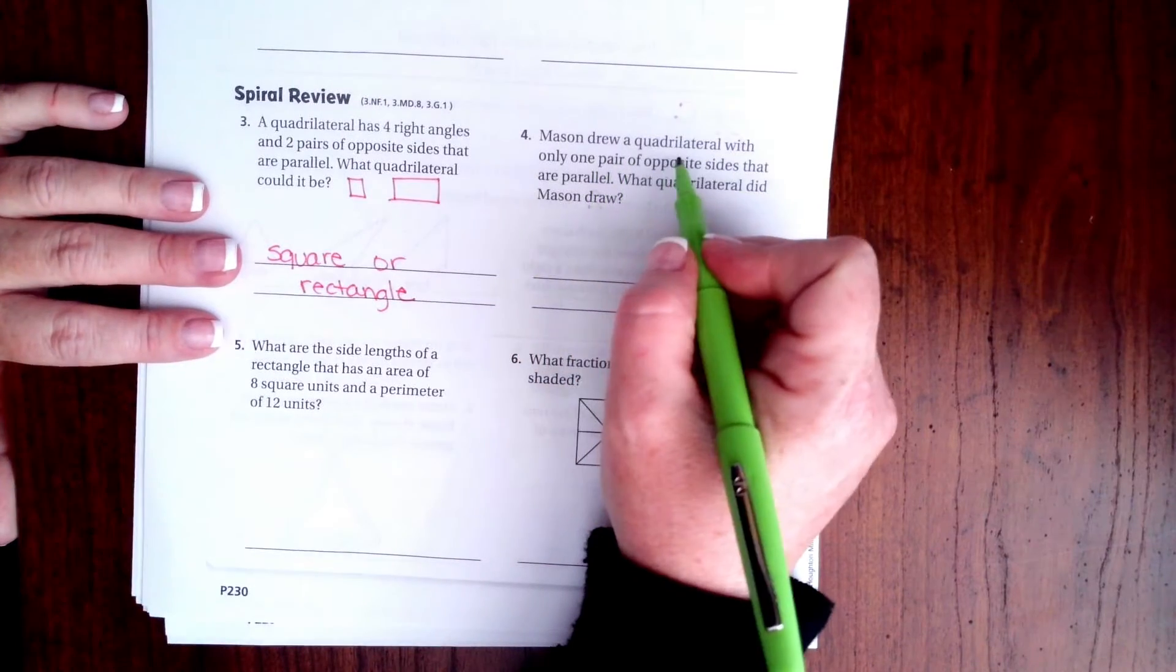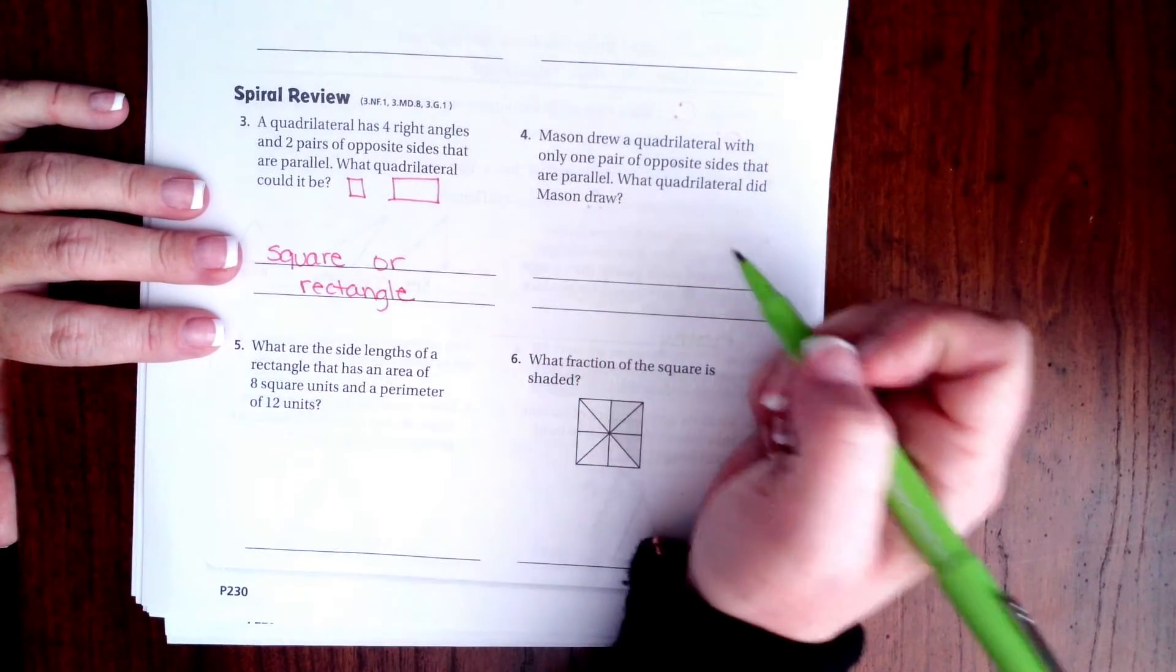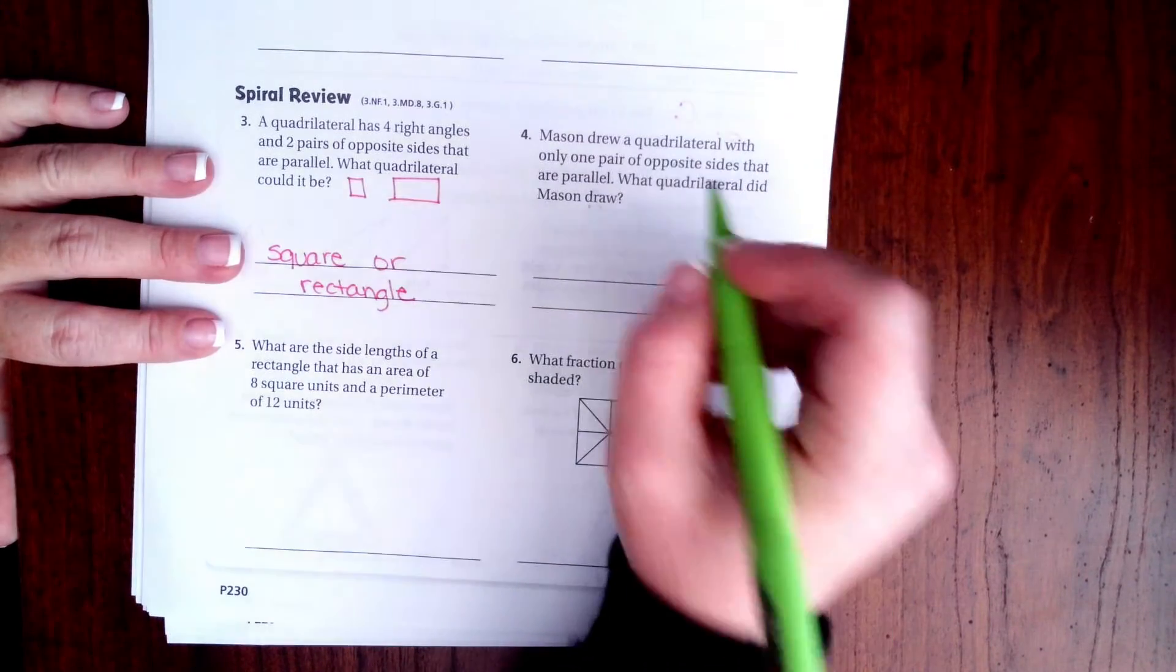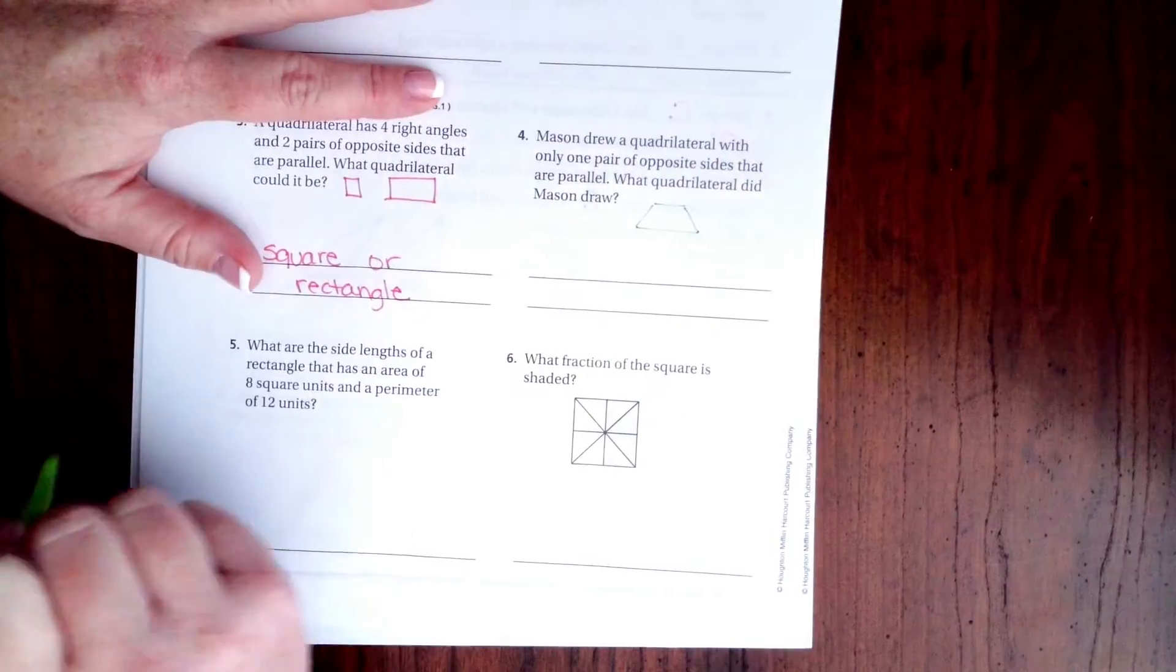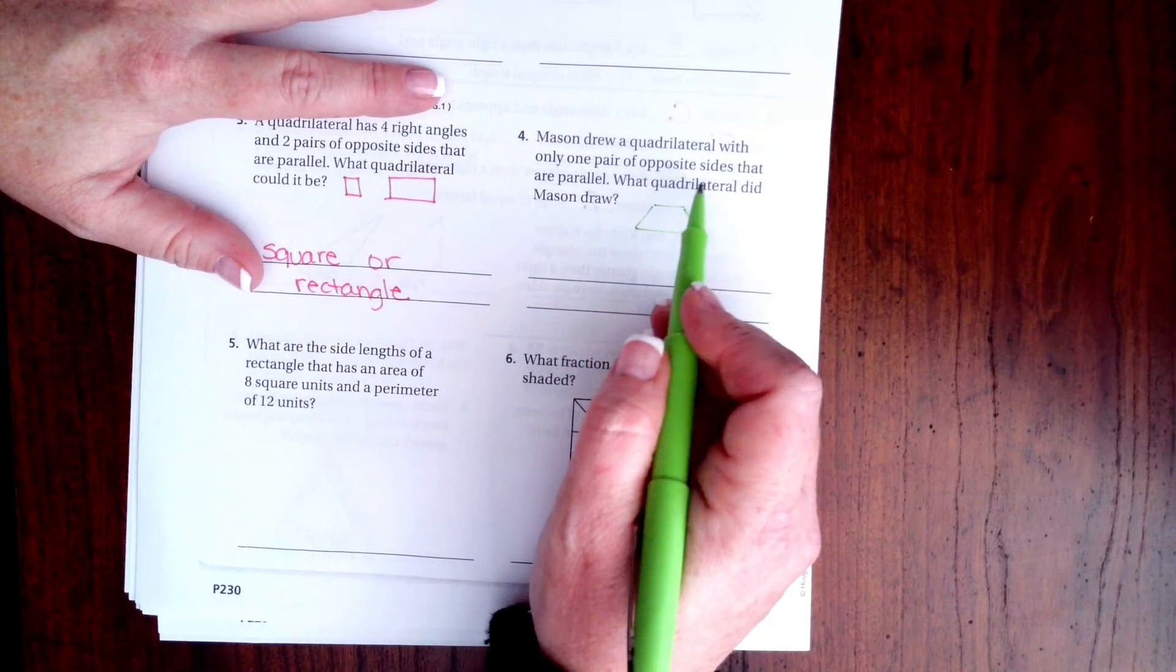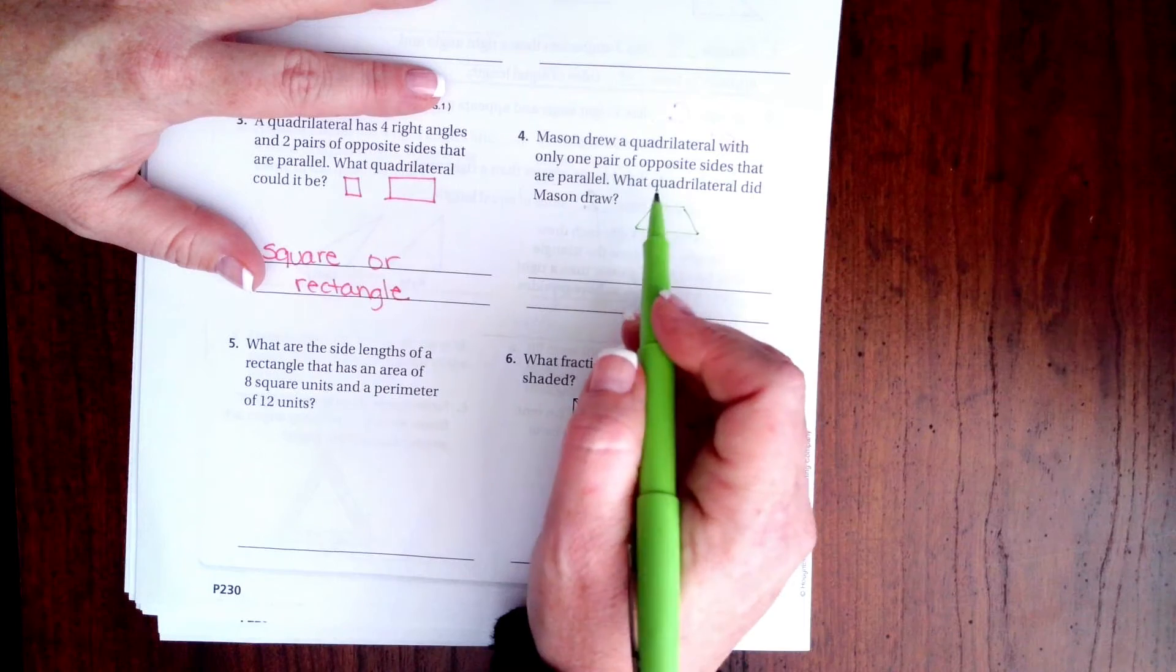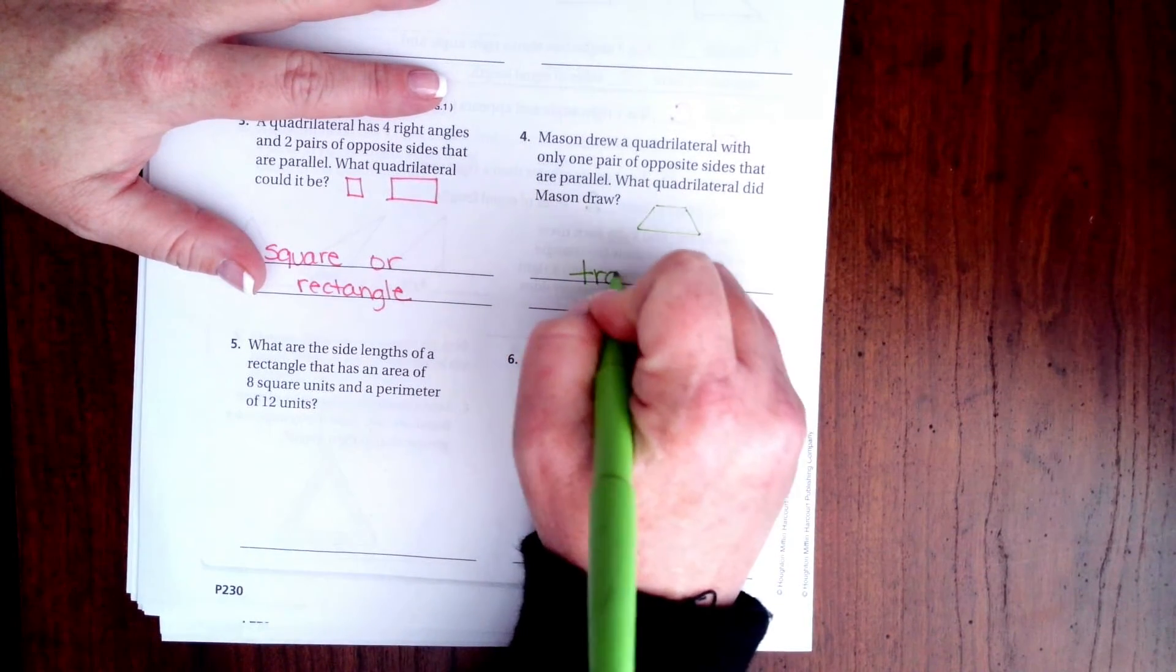Mason drew a quadrilateral with only one pair of opposite sides that are parallel. What quadrilateral did Mason draw? Well, that shape has one pair of opposite sides that are parallel, yep that's it, so that would be a trapezoid.